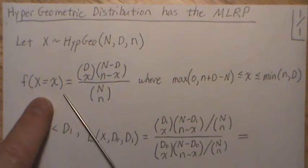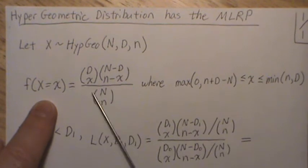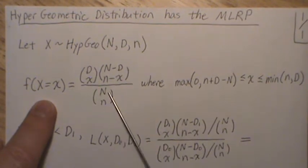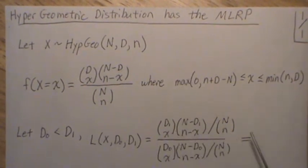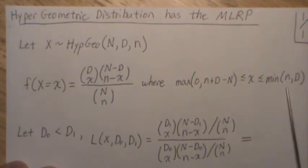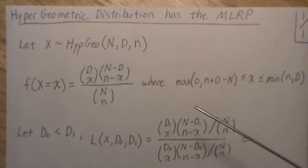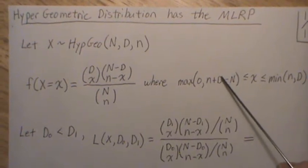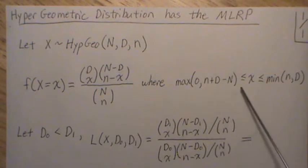It can be easily shown that the probability mass function is this, where these are combinations: D choose X, N minus D choose n minus X, all over N choose n. Now X goes from the maximum of zero and n plus D minus N to the minimum of n and D, and usually in my experience I've always gone from zero to n, but it technically depends upon how many defectives are in your population and the overall population size.